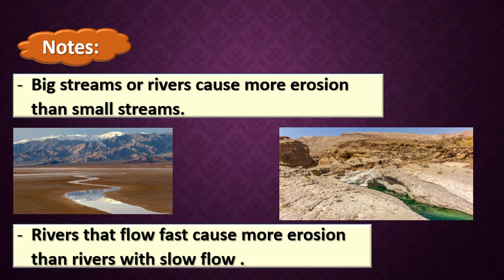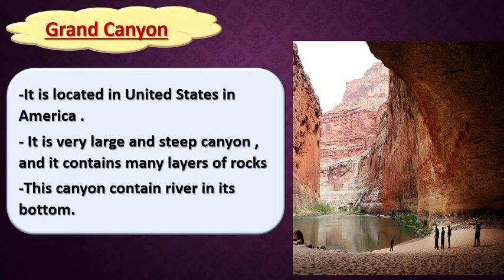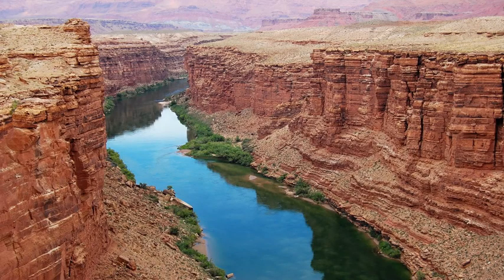Now we will take another type of canyon called the Grand Canyon. The Grand Canyon is located in the United States of America. It is a very large and steep canyon - not gently sloped, but very steep and very deep. This canyon contains many layers of rock. Looking at the picture, it is a very very deep canyon, and the mountains on the two sides contain many layers of rocks, with the river moving at the bottom of this canyon.